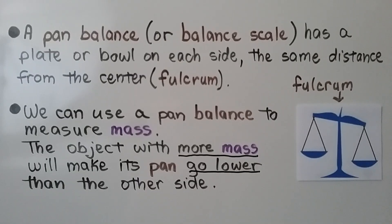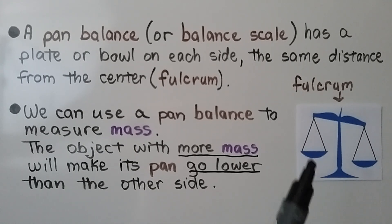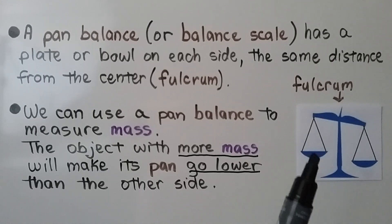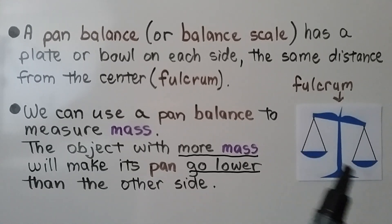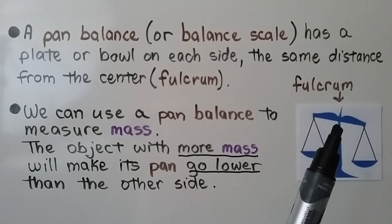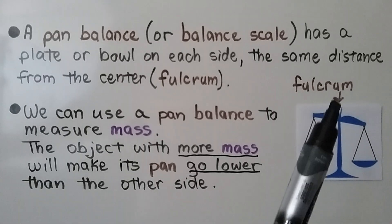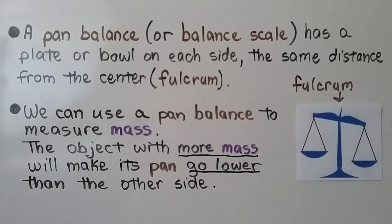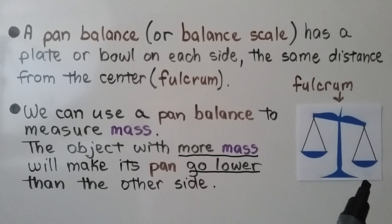A pan balance or balance scale has a plate or bowl on each side, at the same distance from the center, which is called the fulcrum. We can use a pan balance to measure mass — the object with more mass will make the pan go lower than the other side.